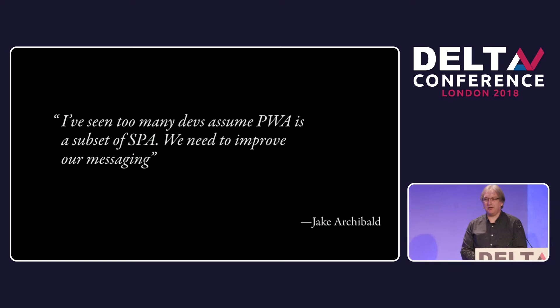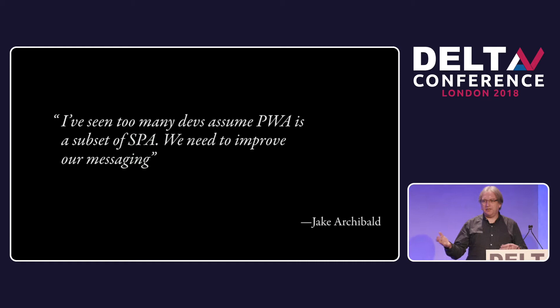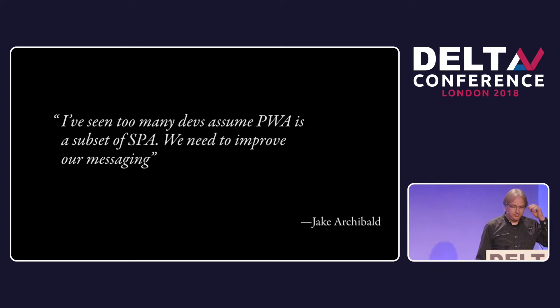I understand it, because we look at a lot of the really impressive progressive web apps, especially the early ones like Flipkart and things like that, and you look at the Twitter mobile app or Instagram's progressive web app, and they happen to be progressive web apps using that whole app shell model. So you could be forgiven for thinking, oh right, I get it — a progressive web app is a single-page app with other stuff on top. But no.